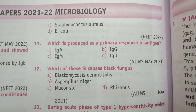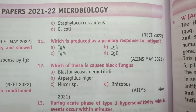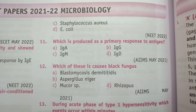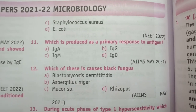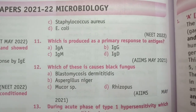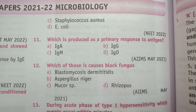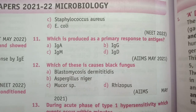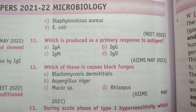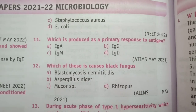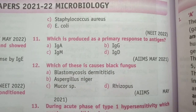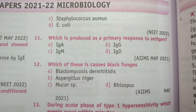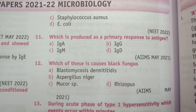Question 11: Which immunoglobulin is produced as a primary response to an antigen? This is a very common and frequently repeated question. The answer is IgM — IgM is produced as a primary response to antigen.